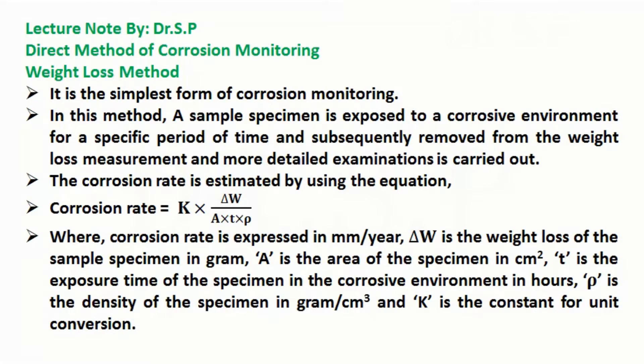The corrosion rate is estimated by using the equation: Corrosion rate equals K multiplied by delta W, divided by A multiplied by T multiplied by rho.